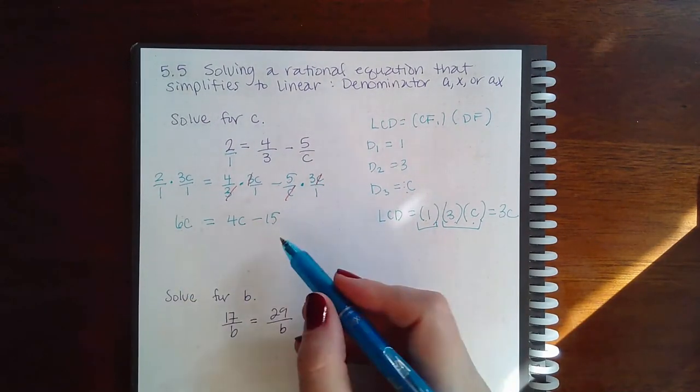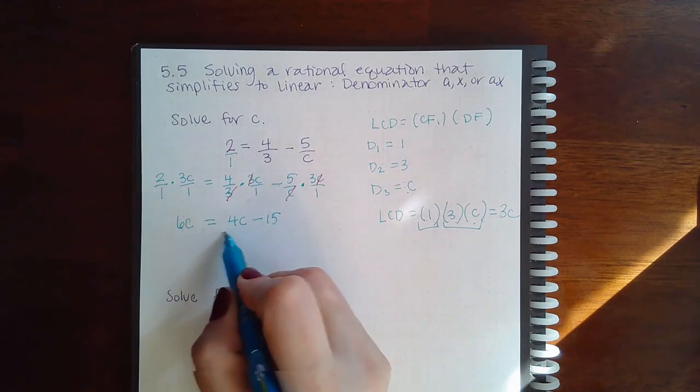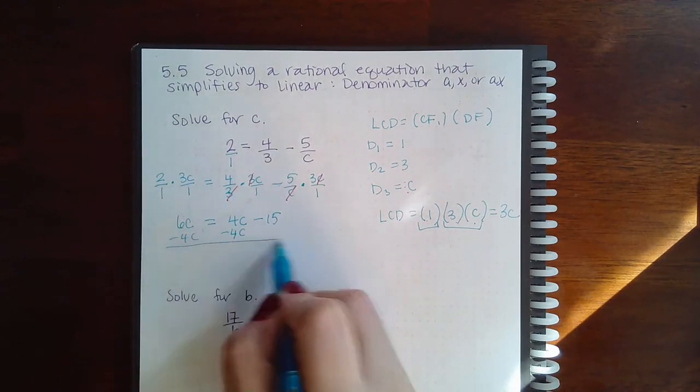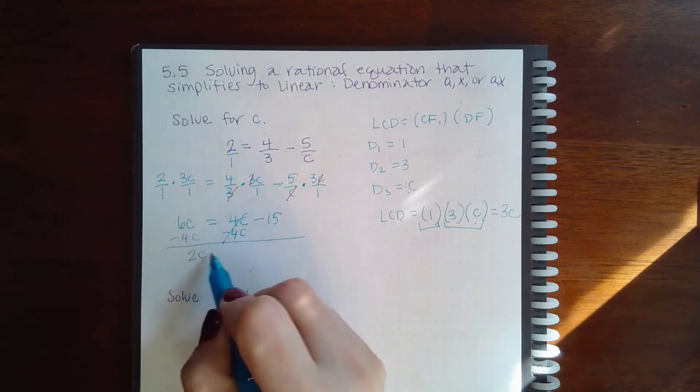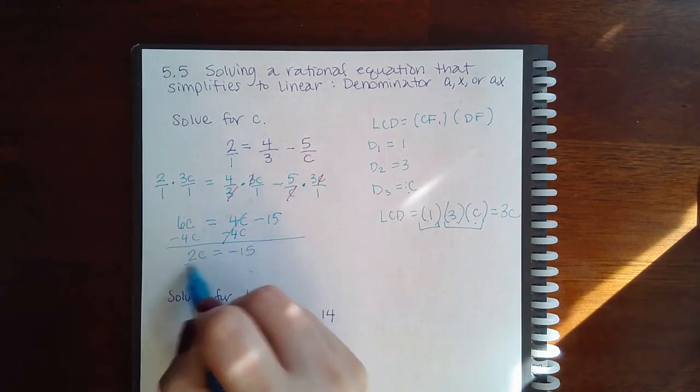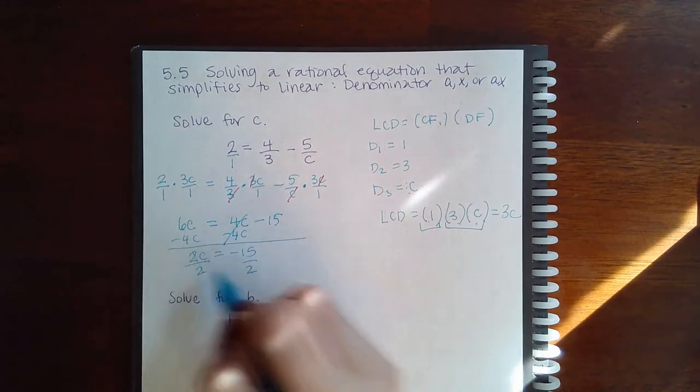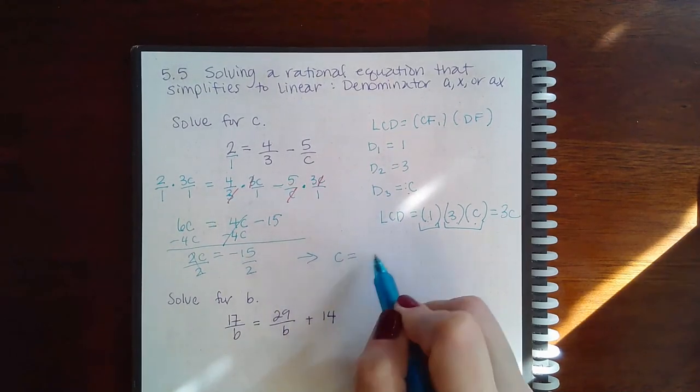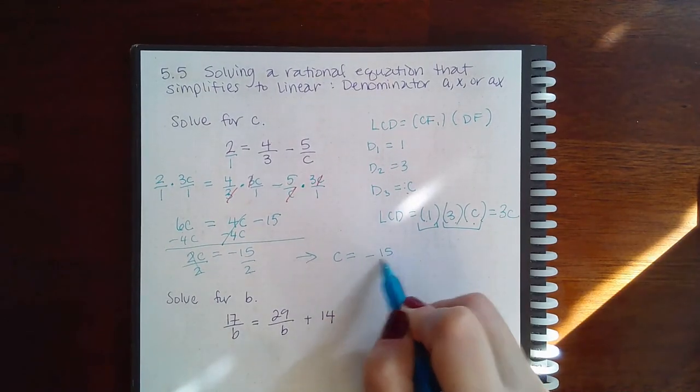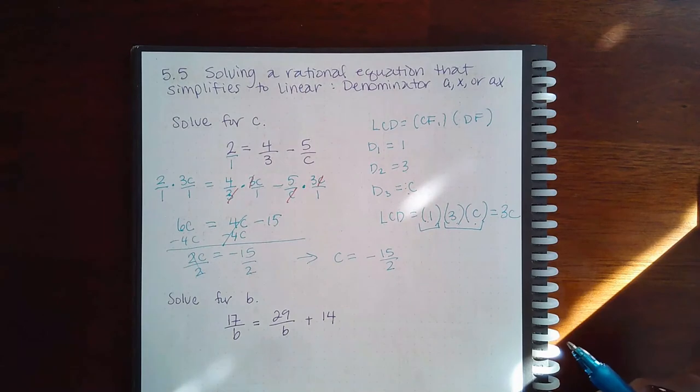How do I solve this resulting equation? I will have to minus 4C on both sides. That's gone. I have 2C equal to negative 15. Divide by 2. I end up with C equal, this does not reduce, so I get C equals negative 15 over 2.